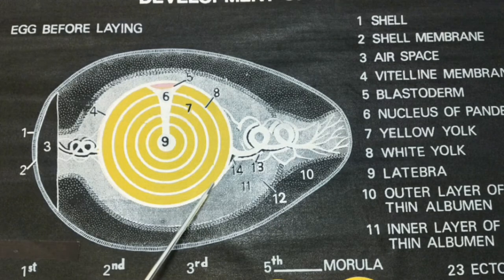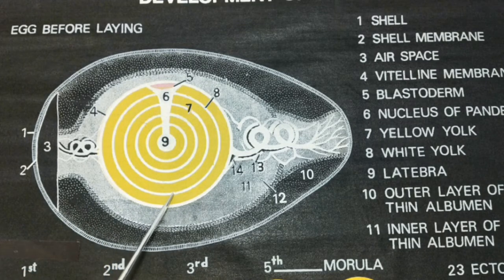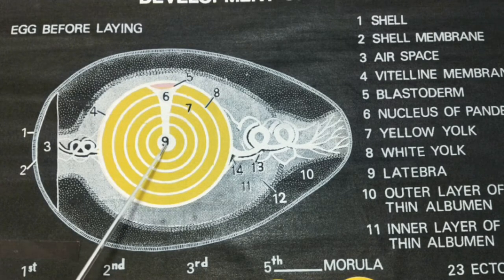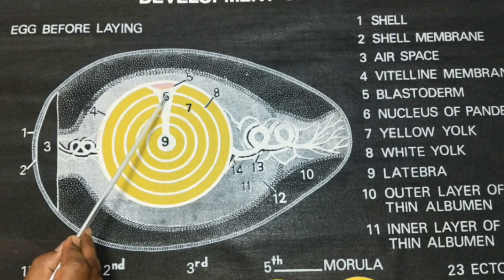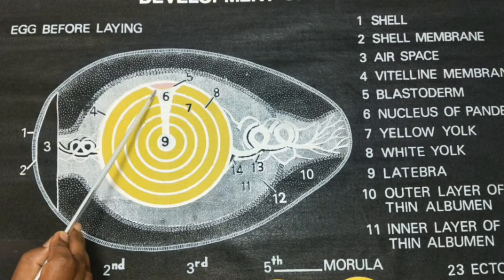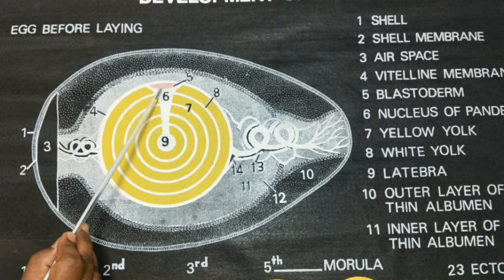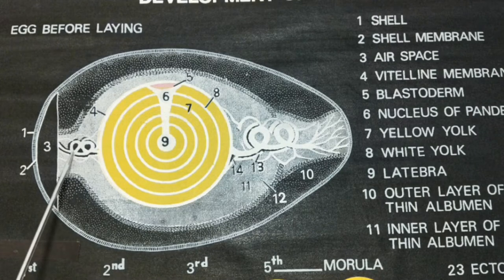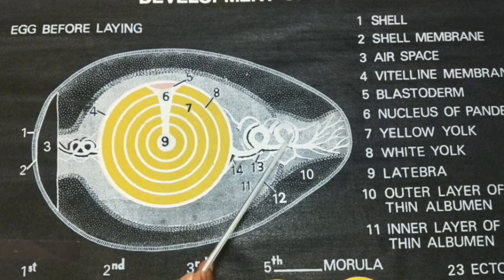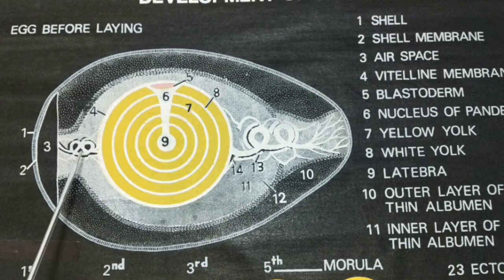Next, there is a vitelline membrane. Inside, there is a yolk. It has two components: the white yolk and yellow yolk. At the center there is a white yolk called Latebra. It moves up and then spreads — in other words, this is called the Nucleus of Pander. On top of that, there is a blastodisc or germinal disc, which will develop as an embryo. On the side, there is a membrane or tube-like structure called Chalaza, which keeps the embryo always on top.